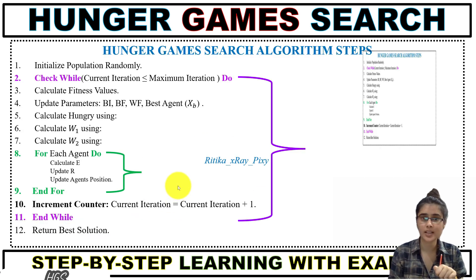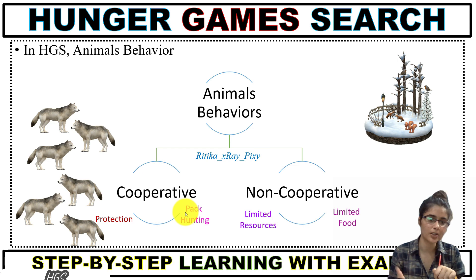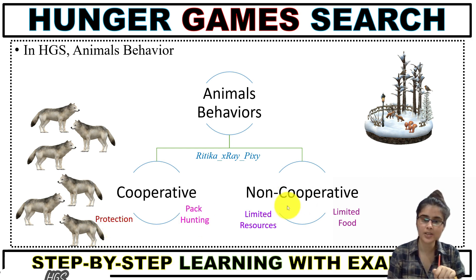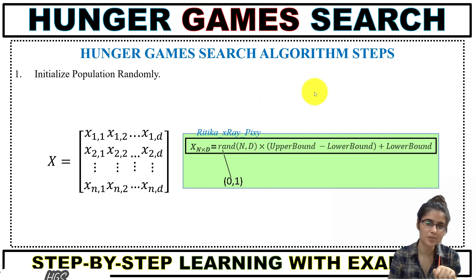Two different animal behaviors are simulated in this algorithm: cooperative and non-cooperative. Cooperative behavior is often seen in a pack or group when animals hunt together or protect each other. Non-cooperative behavior is often seen when food resources are limited. First, the population is initialized randomly. Using the initialization equation, for each agent, n is the total number of search agents, d is the search space dimension, rand is a uniformly distributed random number between 0 and 1, and upper and lower bounds define the search space boundary.